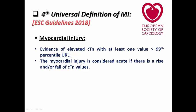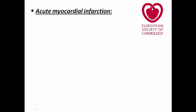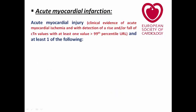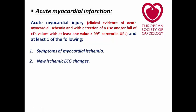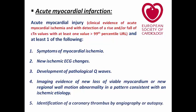The fourth universal definition of MI (2018) defines myocardial injury as evidence of elevated troponin with at least one value above the 99th percentile. This injury is considered acute if there is a detectable rise and/or fall of troponin values. Acute myocardial infarction is then defined when acute myocardial injury is associated with at least one of: symptoms of ischemia, new ischemic ECG changes, development of pathological Q waves, imaging evidence of new loss of viable myocardium or new segmental wall motion abnormalities, or identification of a coronary thrombus by angiography or autopsy.